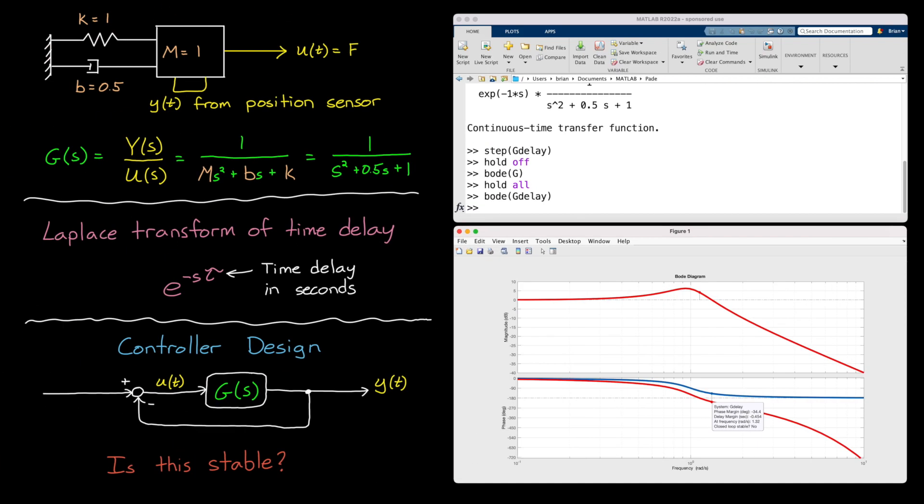Fortunately, there are a lot of tools that can handle delay in this exact form, the e to the minus s tau form. We just saw that Bode plots work perfectly fine with time delay. This is because delay just adds all of that additional phase lag to the system, which can be displayed and interpreted easily in the phase plot.